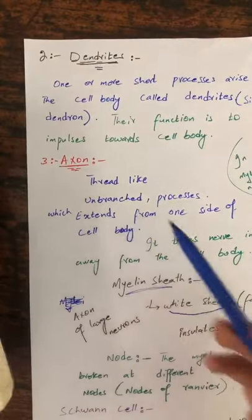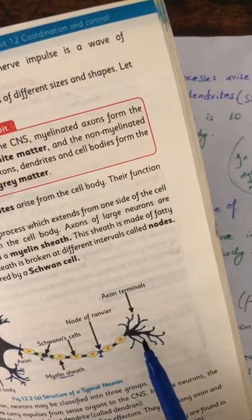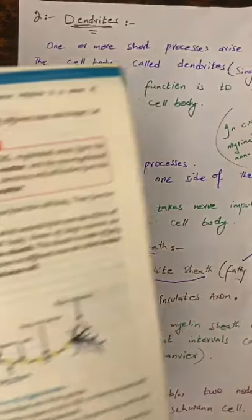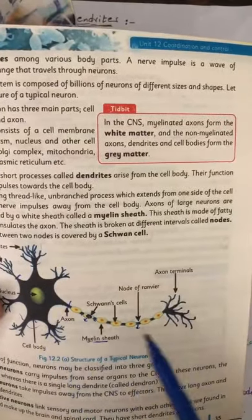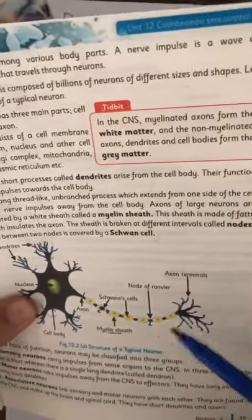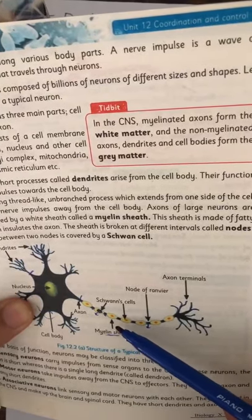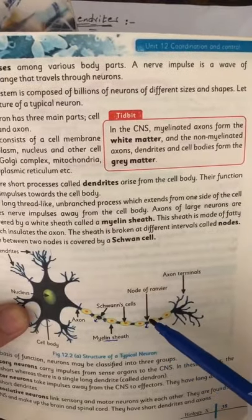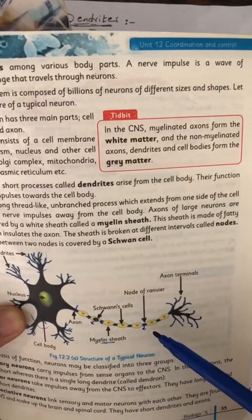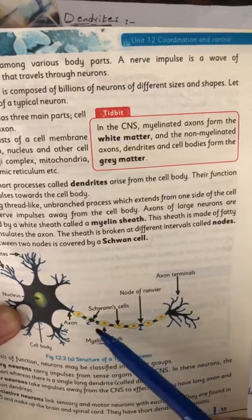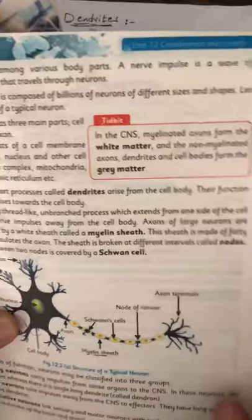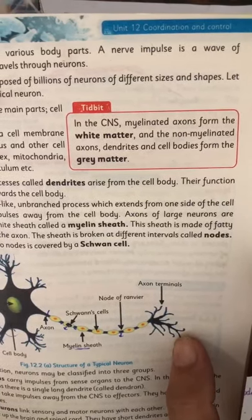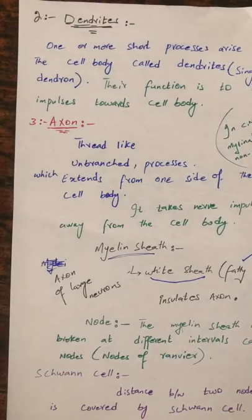The last part is the axon, which is a thread-like unbranched structure. The axon carries nerve impulses away from the cell body. The axon is covered by the myelin sheath made from fatty material. The nodes are known as nodes of Ranvier, and the axon terminals are also known as terminal buttons. That is the structure of a typical neuron. I hope you understand the topic. Thank you.